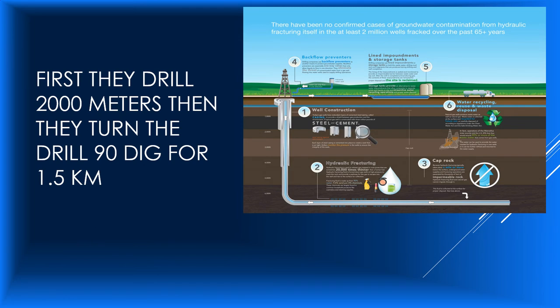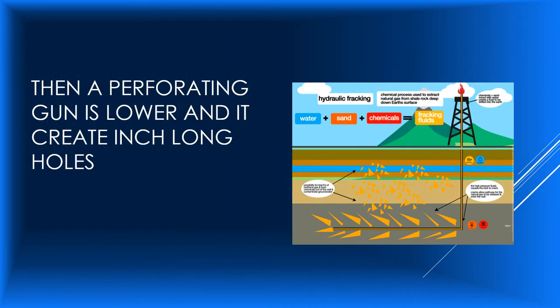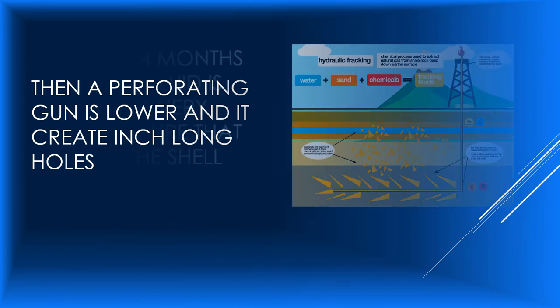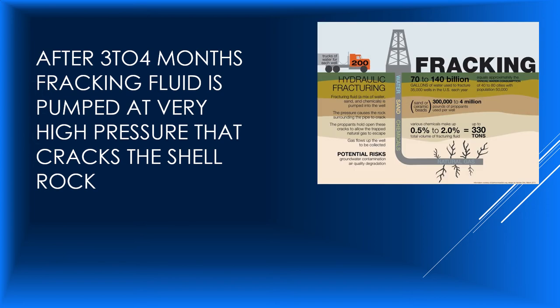They turn the drill 90 degrees for one and a half kilometers. Then a perforating gun is lowered and it creates inch-long holes. After three to four months, fracking fluid is pumped at very high pressure, and that cracks the shale rocks.